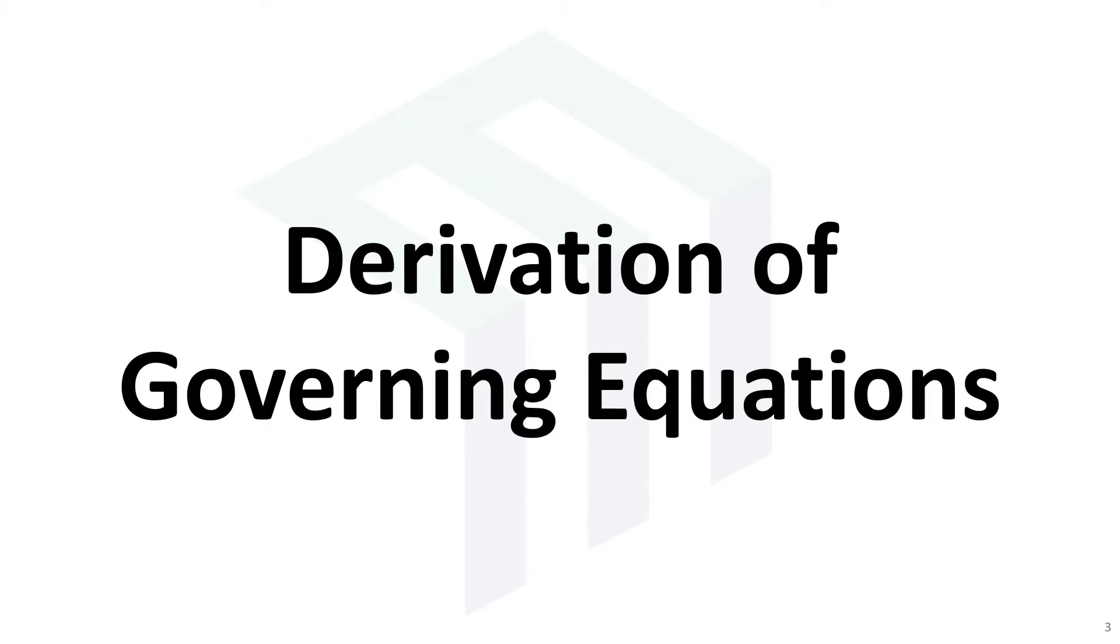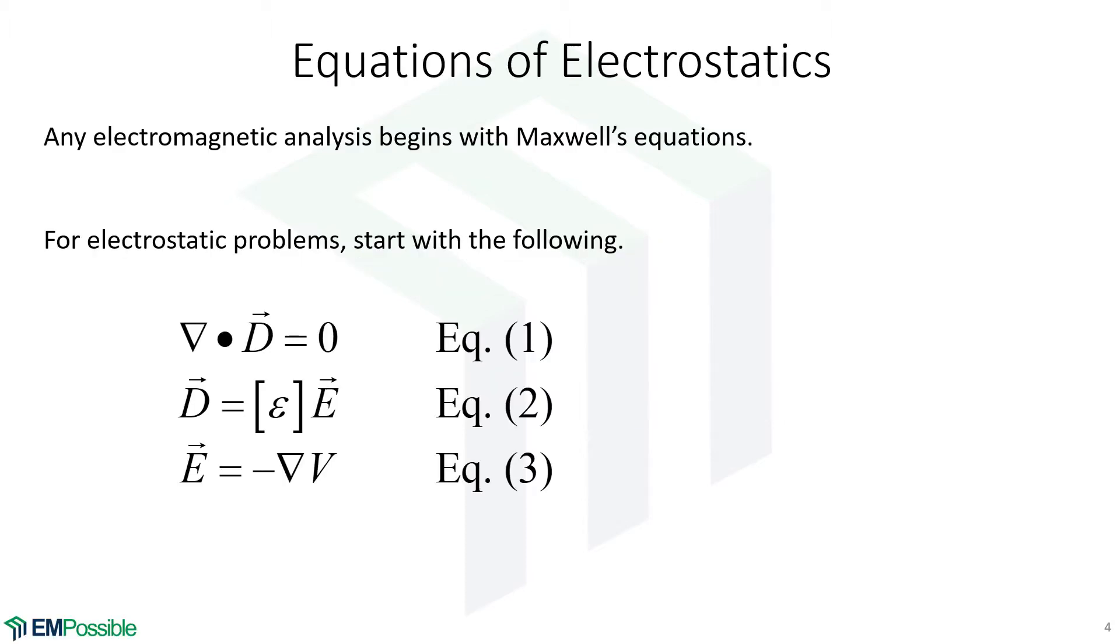Derivation of governing equations. We are making the electrostatics approximation, which reduces Maxwell's equations down to a reduced set of equations. We pull off the three equations describing the electric fields: a divergence equation, our constitutive relation, and a third one that describes our vector electric field in terms of a scalar quantity called the electric potential. These are related through the negative gradient, as we've already talked about.